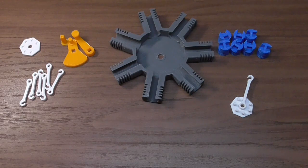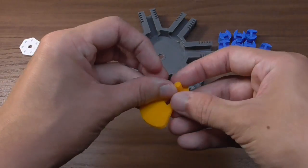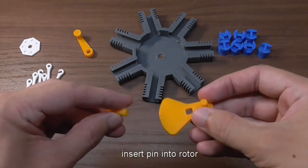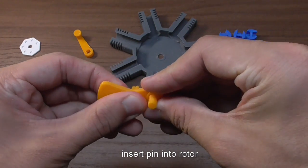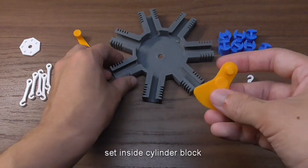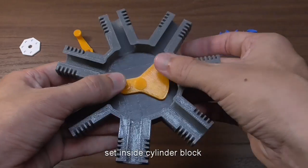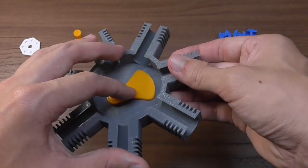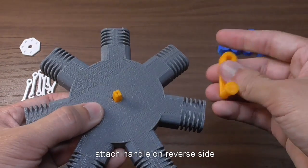I will assemble the parts in the same order as I did in the eight-cylinder model. First, insert the pin into the rotor and set it inside the cylinder housing. Then attach the handle on the reverse side.